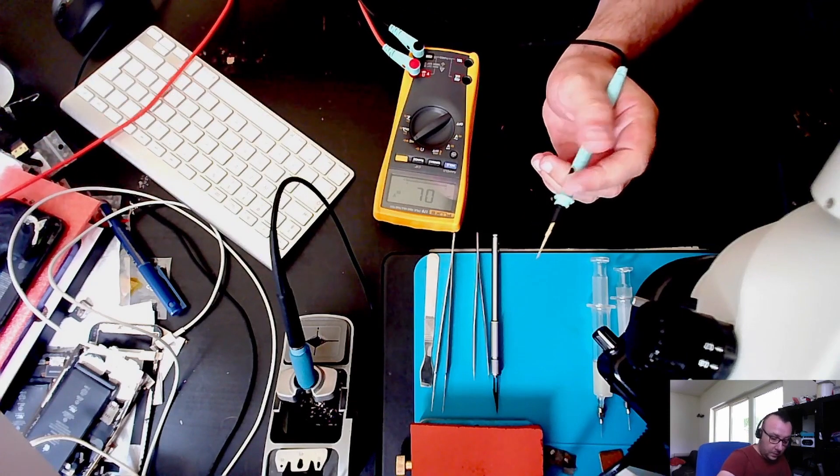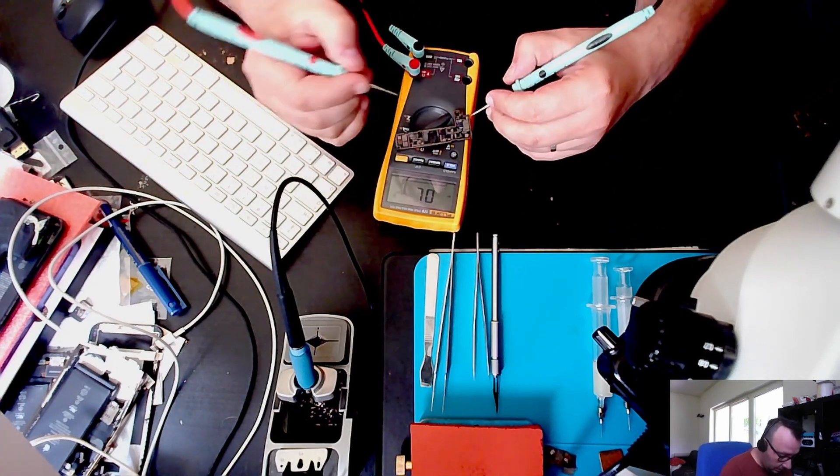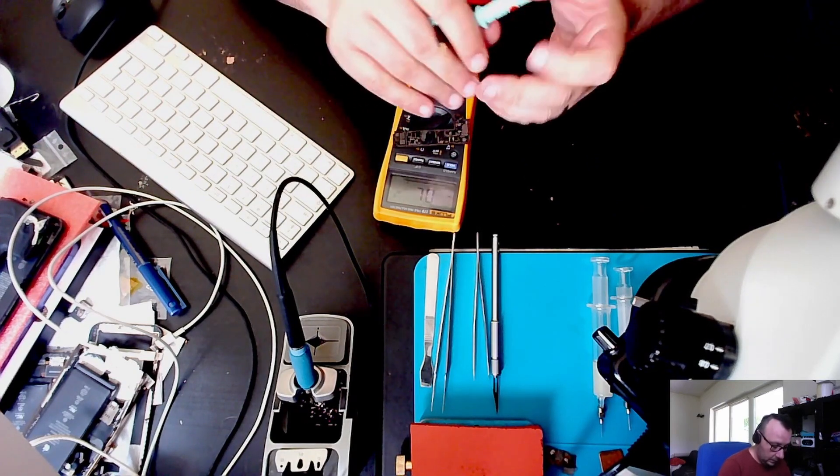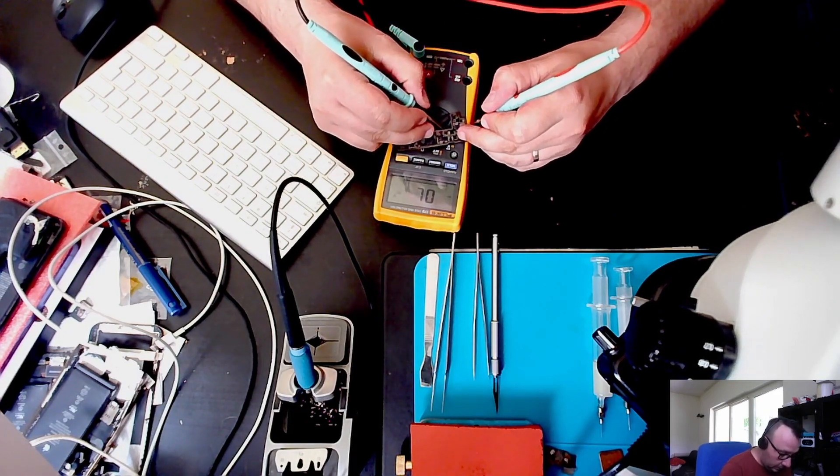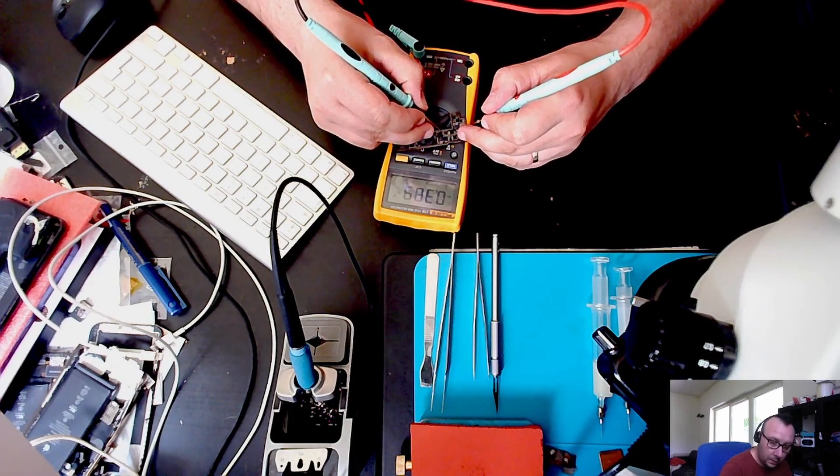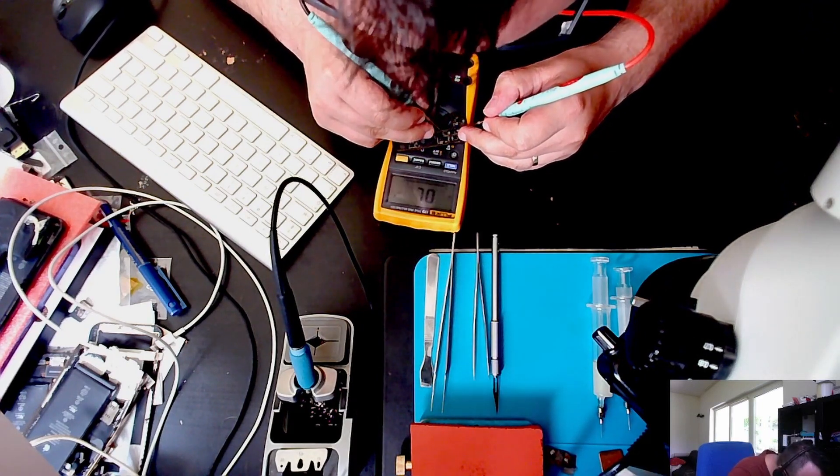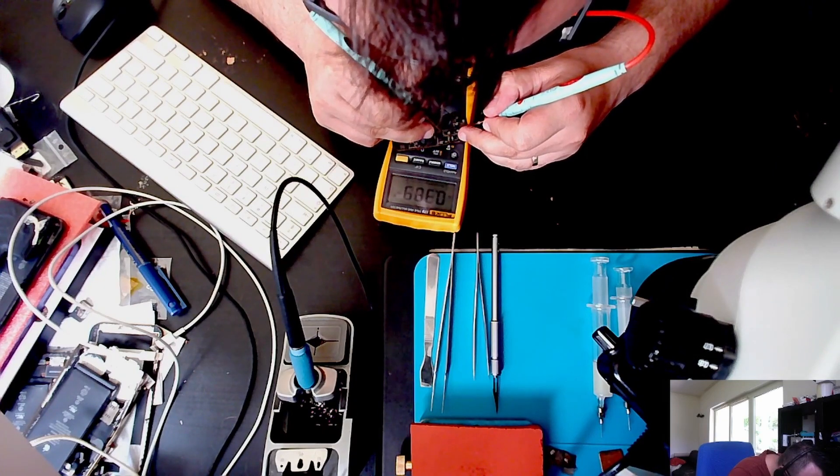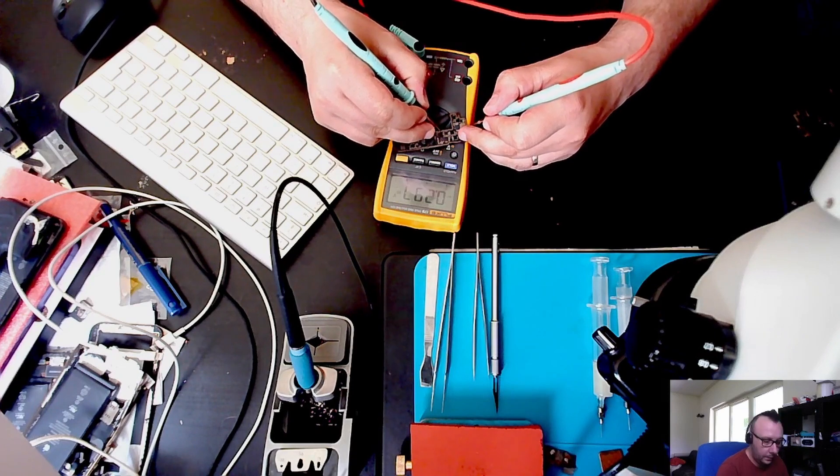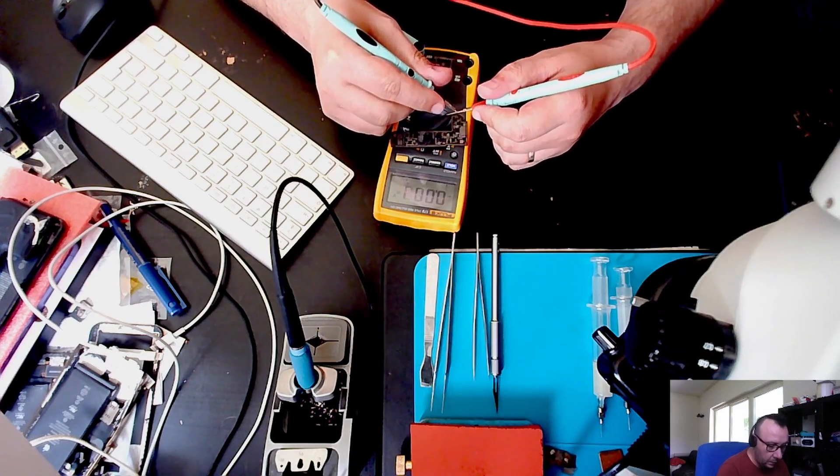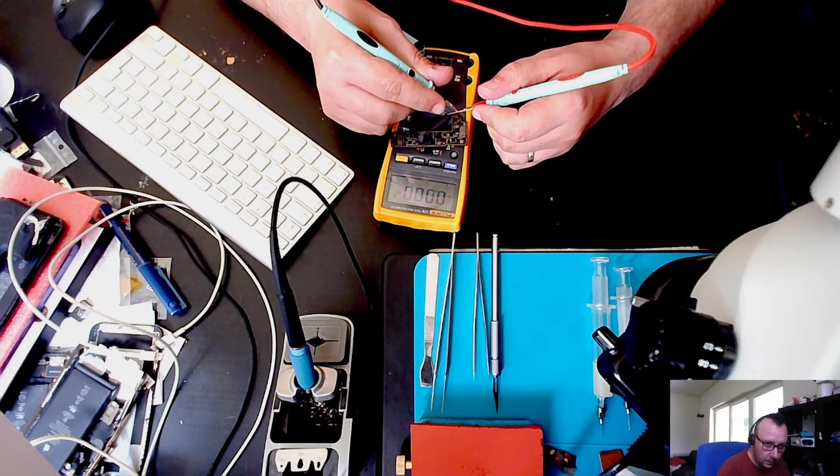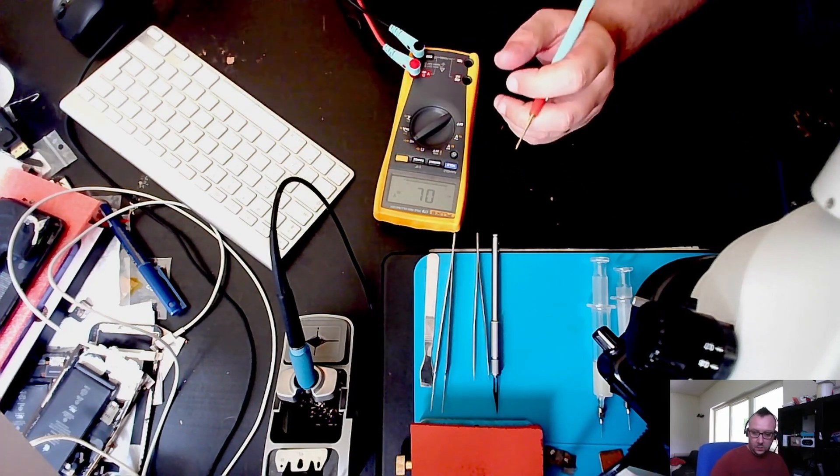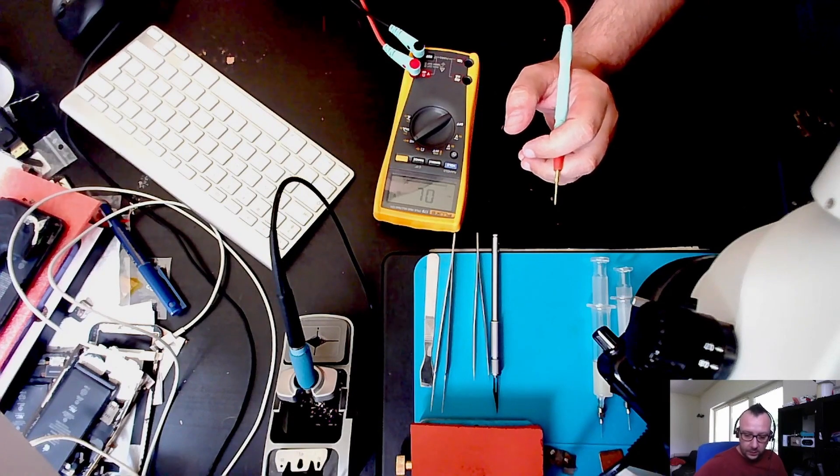You can get basically any kind of multimeter. The Fluke ones, I like because they beep. Under the diode mode, you get a beep. When you measure stuff on boards, I don't necessarily need to look at the multimeter. I put that probe on ground and I just probe around. I don't know if you hear that, but it makes a beep. If it's a full short, then it's gonna do a continuous beep.